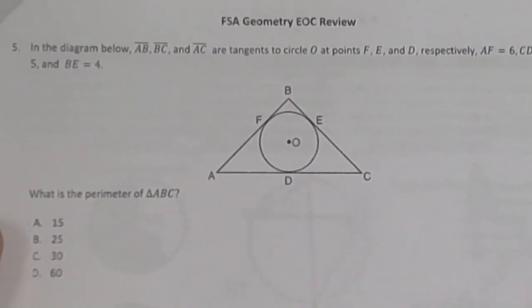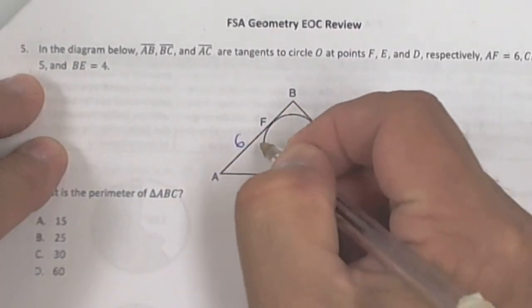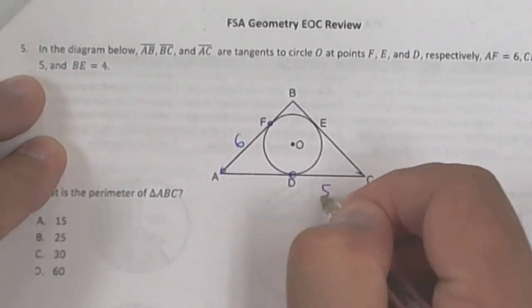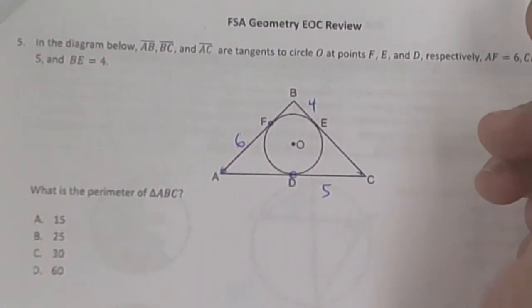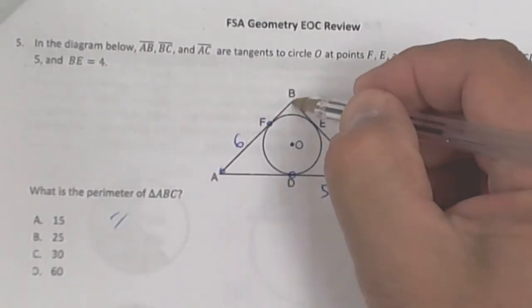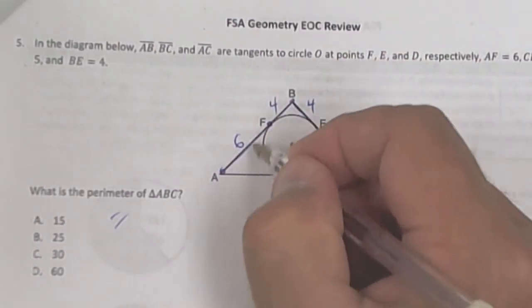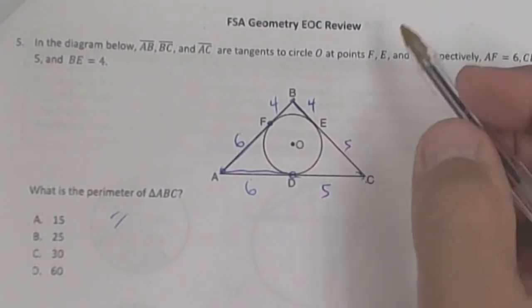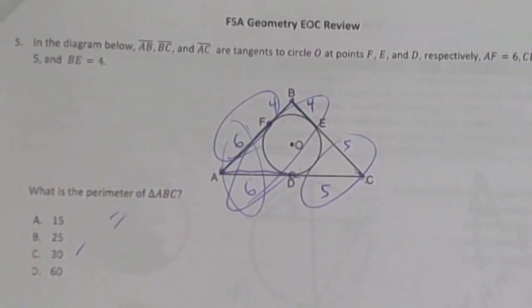For this perimeter problem, AF is 6, CD is 5, and BE is 4. Tangent segments from the same external point are equal, so each pair of tangents from the same point is equal. That gives you equal lengths of 6, 6, 5, 5, and 4, 4. Adding them up: 10 plus 10 plus 10 equals 30. That should be your perimeter.